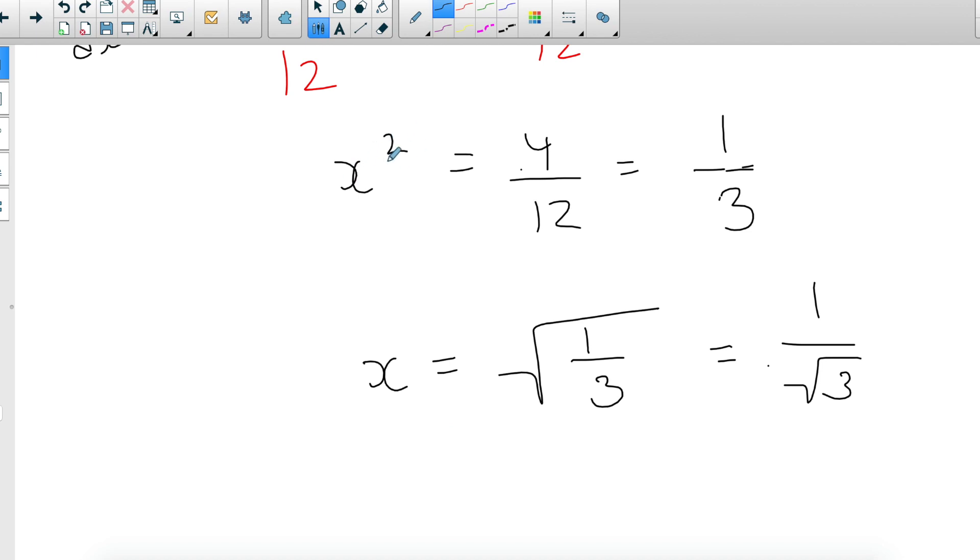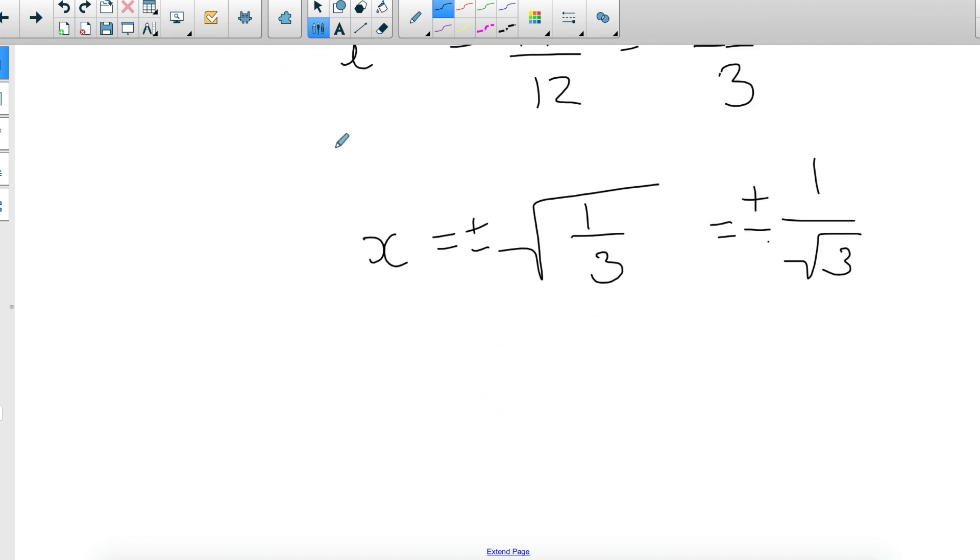And the final answer—I wanted to end up with a quadratic function—because your answer will have to be a plus minus. Because you're taking the root, whenever you take the root of something, your answer will be a plus minus. So the solution to this will be either a positive 1 over square root of 3 or a negative 1 over square root of 3.